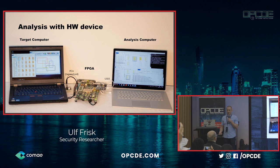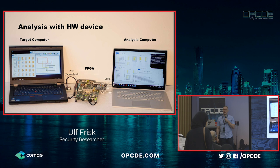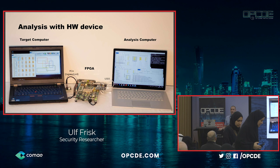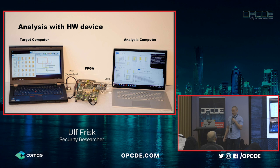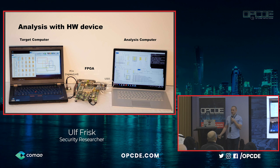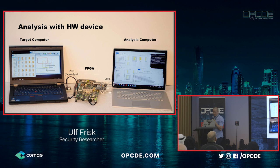I've wrapped it in some extra metadata, which allows me to transmit it over USB 3 onto the FPGA. The FPGA then takes the PCI Express transaction layer packet, unpacks it, and puts the raw TLP packet on the PCI Express of the target system. Once the PCI Express packet reaches the root complex of the target system, it sees it's a memory read packet — reads from the physical memory and responds with a completion packet containing the actual data. The FPGA forwards it back to the analysis computer. Writing works pretty much the same way.